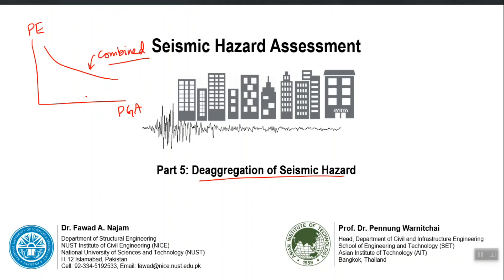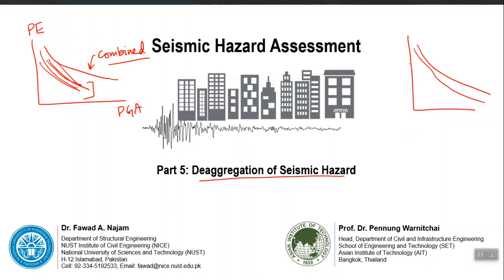But I can also construct 5 different hazard curves, one from each source, and then add them to construct the final combined one. These individual lines will tell me which fault is contributing how much to my final number. It may be possible that one fault has a hazard curve contributing significantly while another is not contributing significantly.